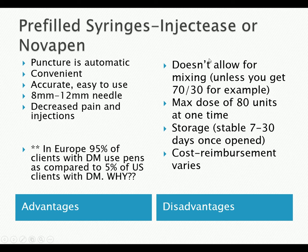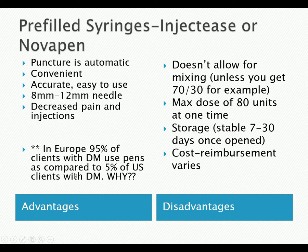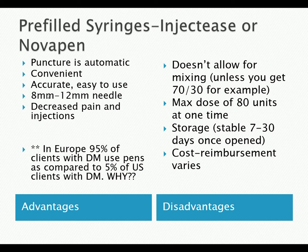Pre-filled insulin syringes, like Nova pens, are popular. In Europe, 95% of clients use pens compared to only 5% in the US, because European diabetics go to specialists and have socialized medicine encouraging pen use. Advantages include automatic puncture, convenience, accuracy, and ease of use. Disadvantages include no mixing ability (unless 70-30 formulations), a maximum dose of 80 units at one time, storage is stable 7–30 days once opened, and cost reimbursement varies.